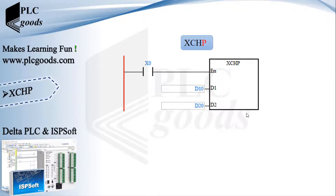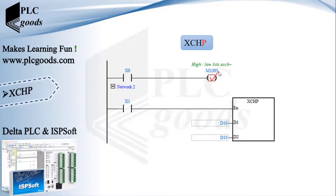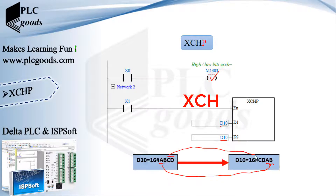The XCHP instruction has two inputs. For this example it exchanges the content of D10 and D20. If their initial values are 1 and 5, after one execution their values will be 5 and 1 respectively. Note that this instruction has a special memory — if I activate M1303, then I can exchange the lower and higher part of a stored number. Pay attention: if the simple XCH instruction is used, data may be exchanged frequently.